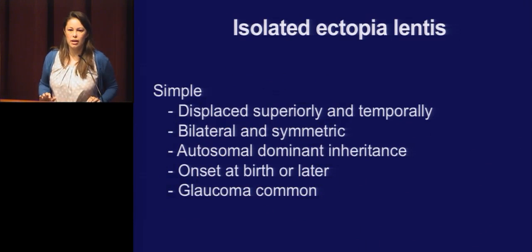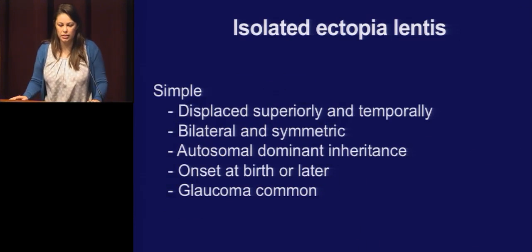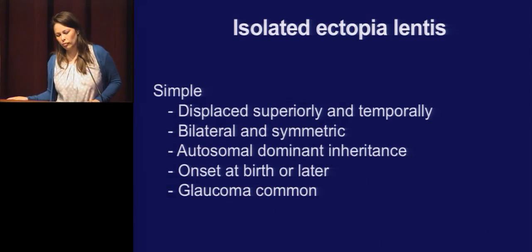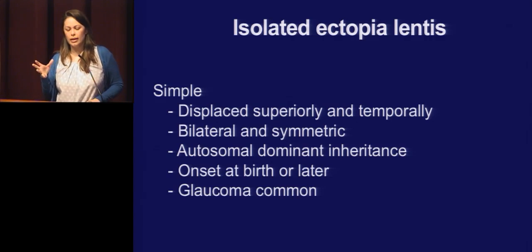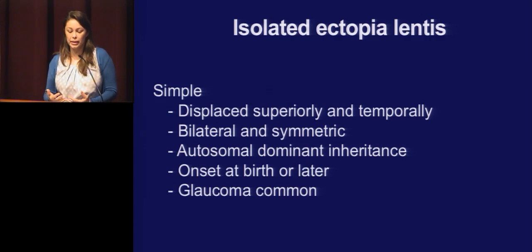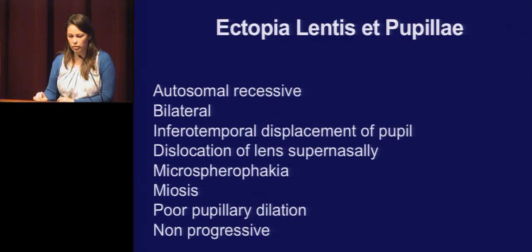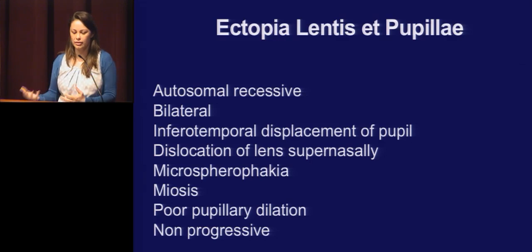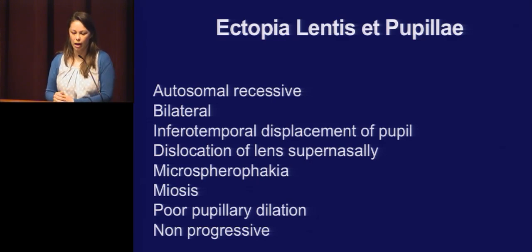Isolated ectopia lentis — the lens or pupil can be displaced superiorly and temporally. It's bilateral and symmetric, can be inherited as autosomal dominant, and glaucoma is very common in these patients. Ectopia lentis et pupillae is recessive and bilateral — the teaching point is that you see displacement of the pupil in one area and dislocation of the lens in the opposite direction. These patients can have microspherophakia with miosis and poor pupil dilation.